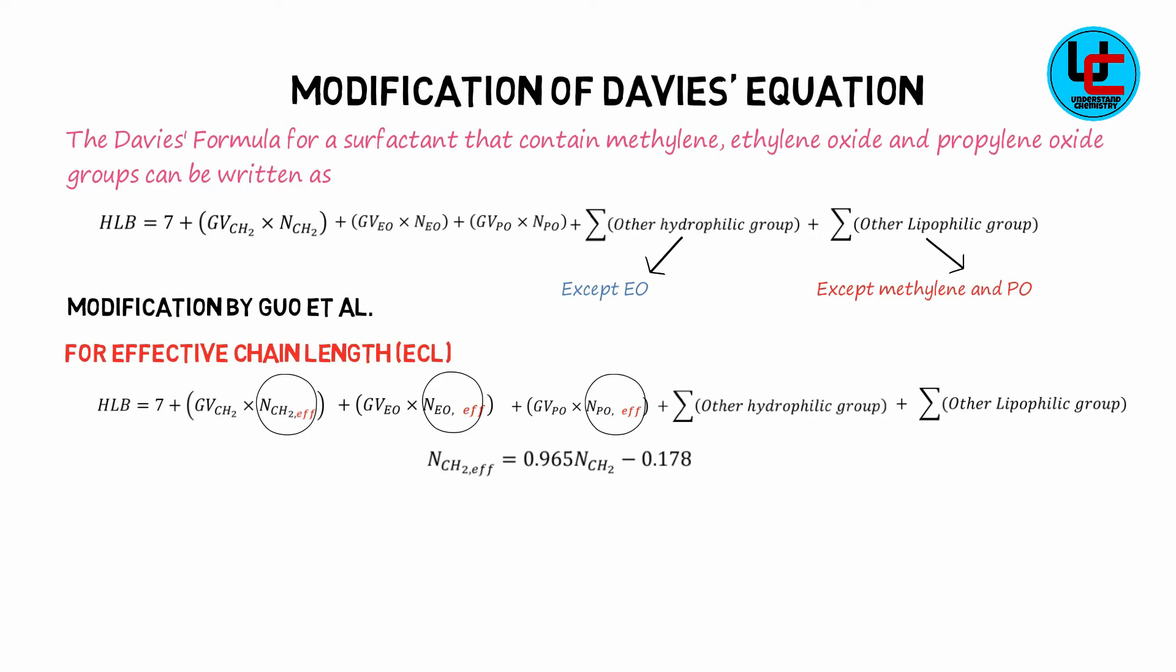From the published data, N-methyl effective is given as 0.965 times N-methylene minus 0.178.